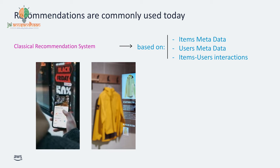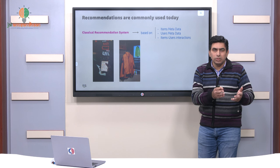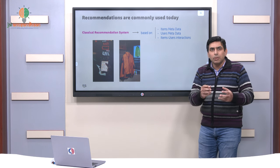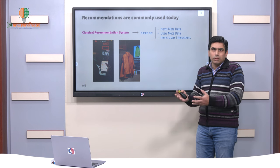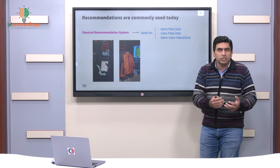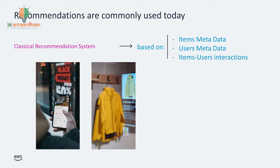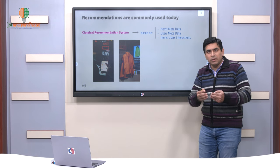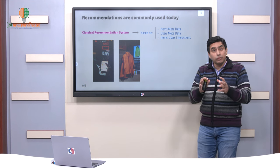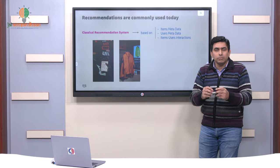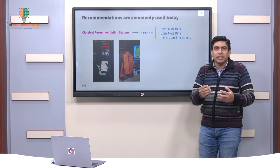If you look at classical recommendation systems that have been working till now, how do they work precisely? In the case of an education website, they have item data — the list of courses offered, subjects, teaching methods, and similar things. On the retail side, different product descriptions are stored. On the video side, platforms like Netflix or YouTube know what content you have been watching. They also have user data — what you are browsing, what you are doing, whether you liked a video, how long you watched it. So they have item data and user data, and they know how you interact with those items, then they build different patterns and machine learning algorithms to give recommendations.